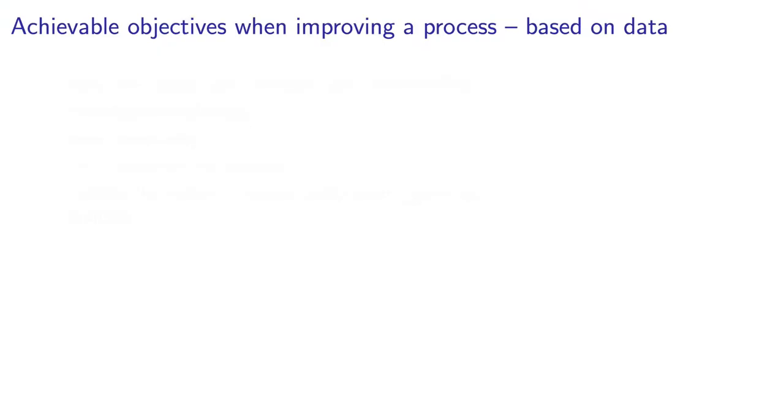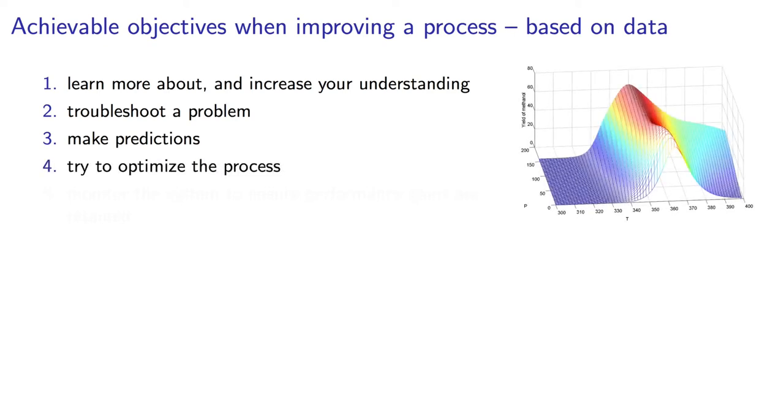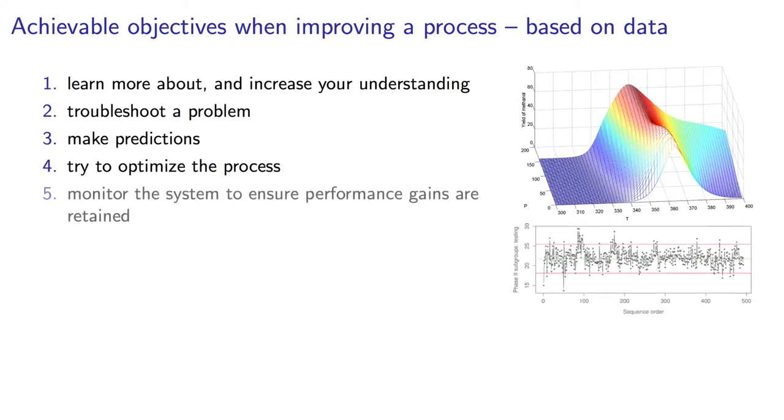When I use data to improve a process or a system, in my experience I find that I'm inevitably trying to achieve one of these five objectives. Trying to learn more or increase my knowledge of the system, maybe I'm troubleshooting the process, or perhaps I'm using the data to make some form of prediction, or maybe I'm trying to optimize the system in some way. Or finally, I might just be monitoring the process based on the data to make sure that I'm retaining all those performance gains I've made in the past.